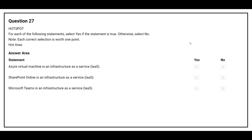Question number 27. For each of the following statements, select yes if the statement is true, otherwise select no. The first statement is: Azure Virtual Machine is an Infrastructure as a Service. The correct answer is yes. The second statement is: SharePoint Online is an Infrastructure as a Service. The correct answer is no. The third statement is: Microsoft Teams is an Infrastructure as a Service.